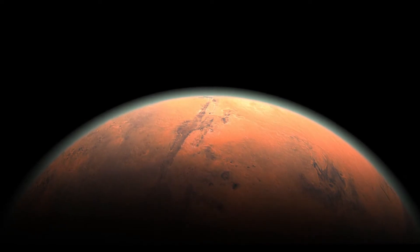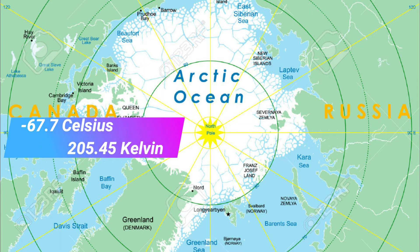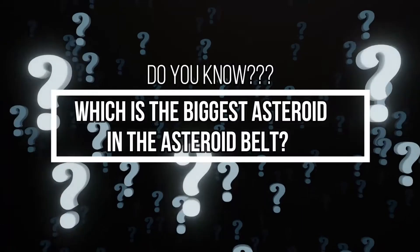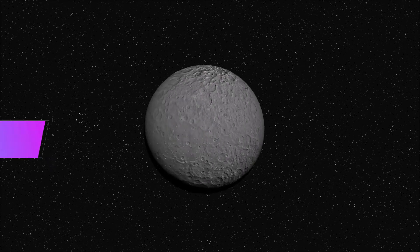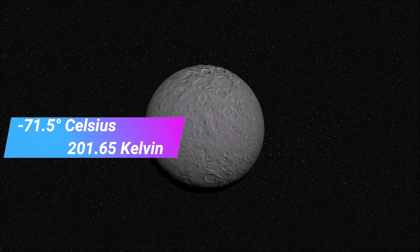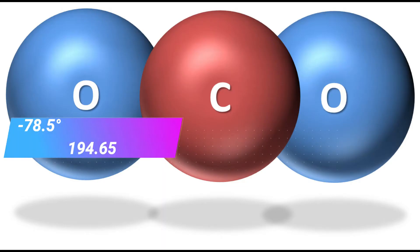The average temperature on Mars is minus 63 degrees Celsius or 210.15 Kelvin, making future manned missions very difficult. The lowest temperature ever recorded at the North Pole of the Earth is minus 67.7 degrees Celsius or 205.45 Kelvin, recorded in the year 1933. The biggest asteroid in the asteroid belt, Ceres, has an average temperature of minus 71.5 degrees Celsius or 201.65 Kelvin.